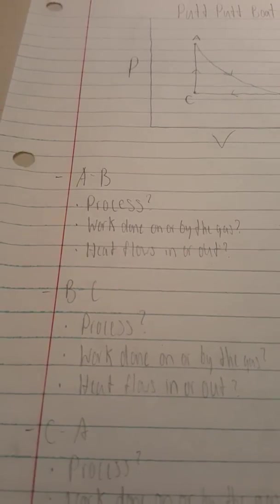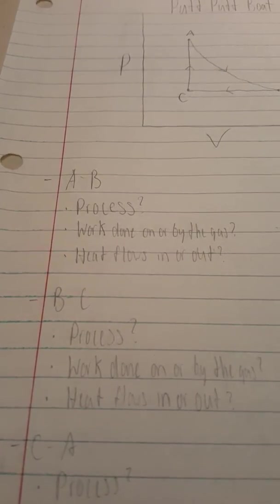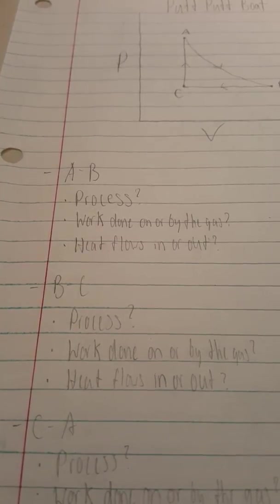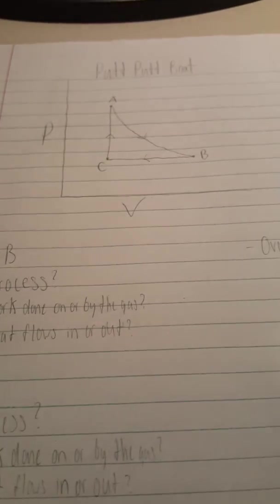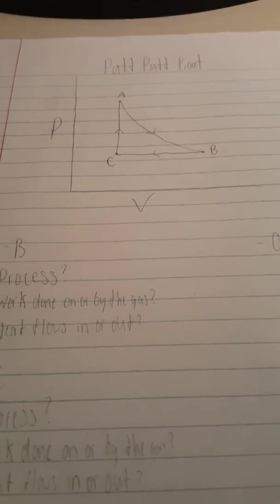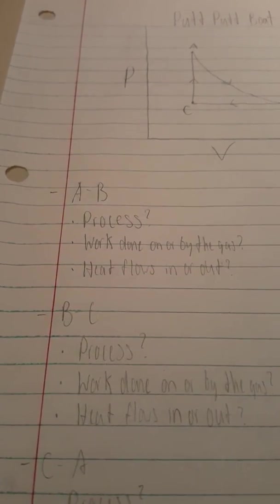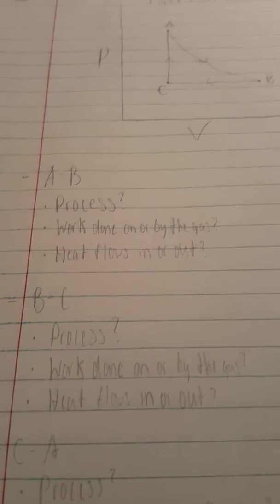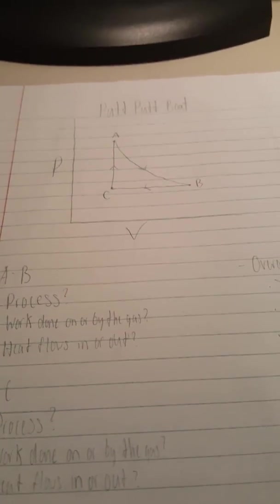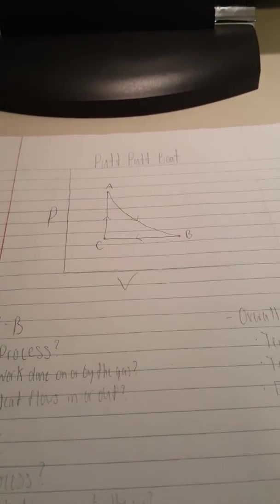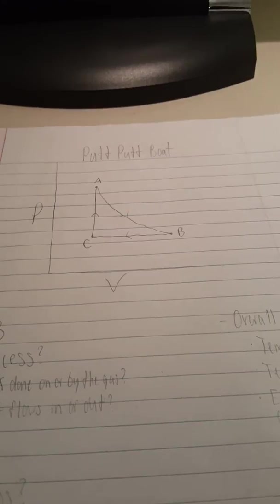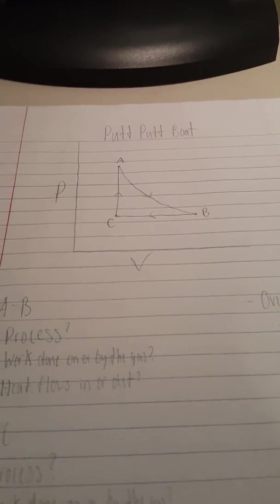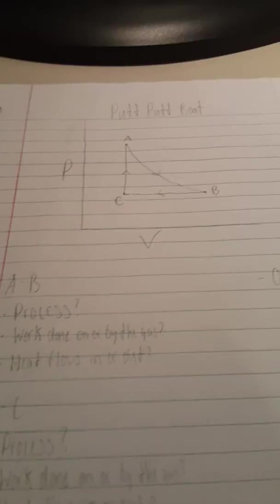Now when we look at B to C, we want to answer the same three questions: what is the process, is work being done on or by the gas, and is heat flowing in or out? B to C is a horizontal line that travels left, and a horizontal line that travels left is an isobaric process where pressure stays constant. We need to look at the volume to figure out whether work is being done on or by the gas, and we can see that the volume in this case is getting smaller. Therefore, work is being done on the gas because volume decreases.